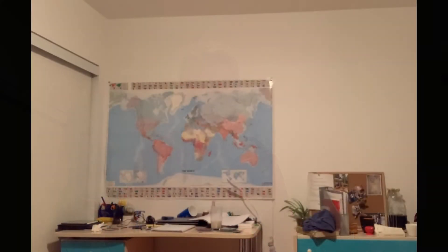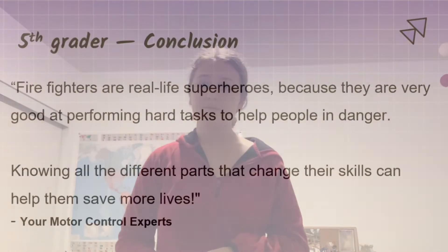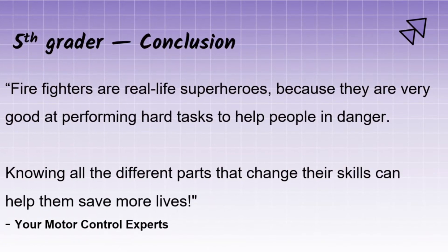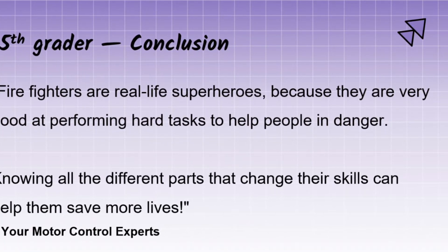When we're looking at object manipulation, we're talking about how many different objects we have to move around to accomplish what we want to do. In the case of a firefighter, an example would be bringing someone unconscious out of a burning building, or even just moving pieces of a building so that we can get out of it. A firefighter's job gets a lot harder the more objects they have to move. Firefighters are real life superheroes because they are very good at performing hard tasks to help people in danger. Knowing all the different parts that change their skills can help them save more lives.